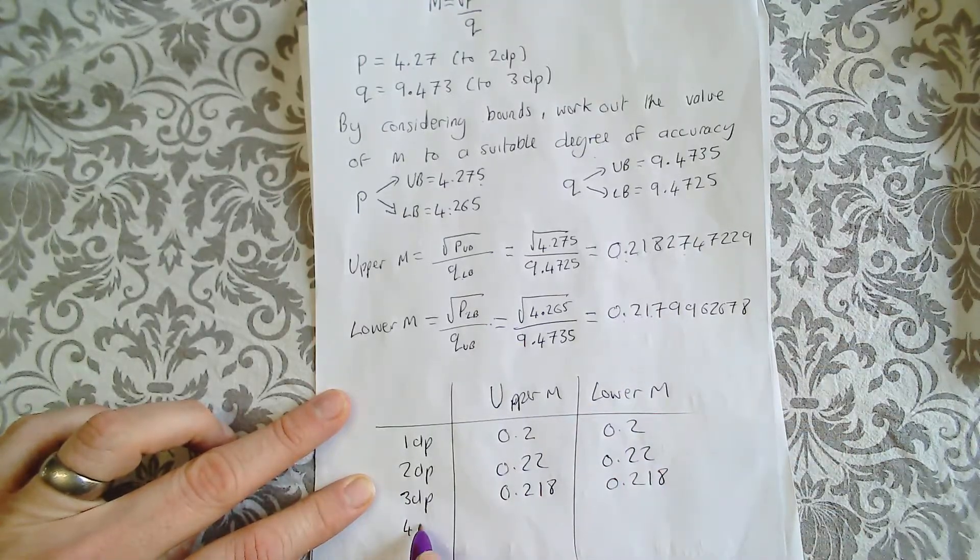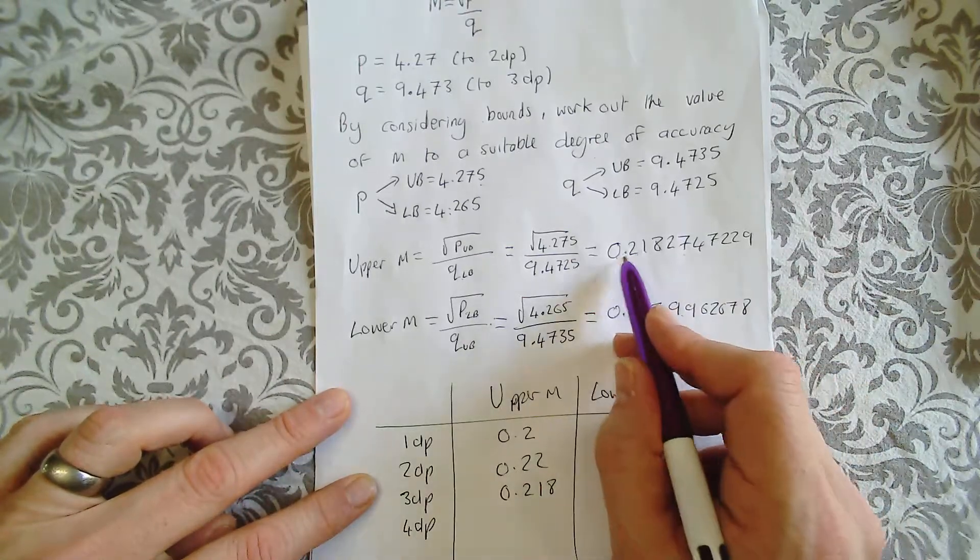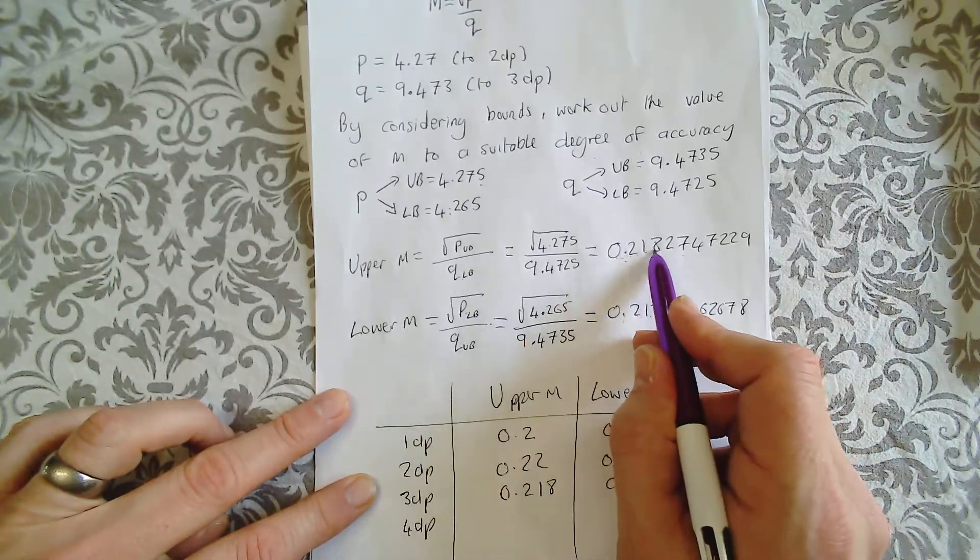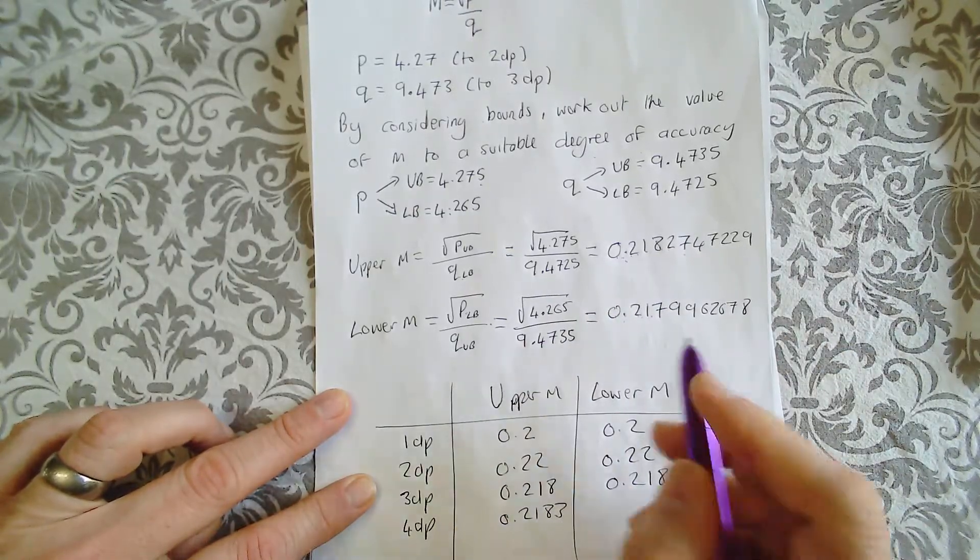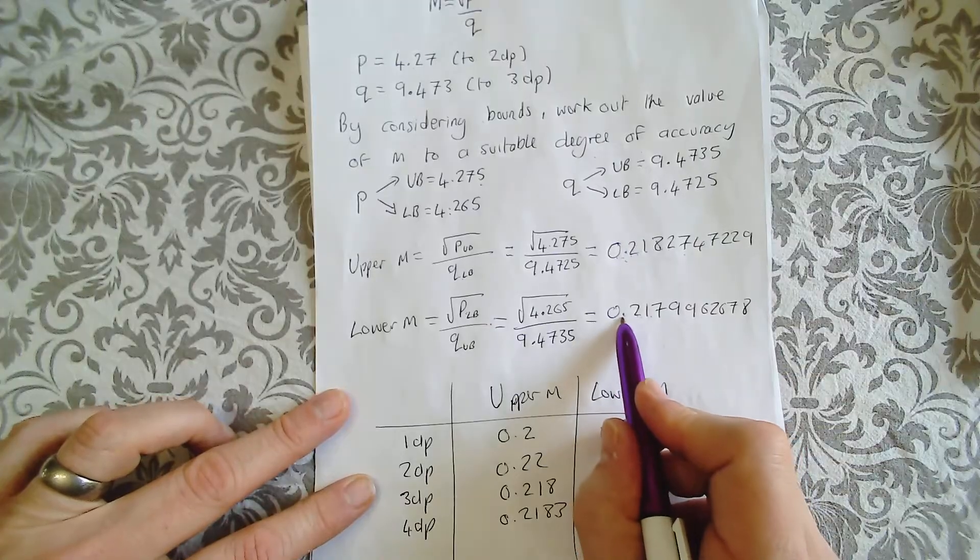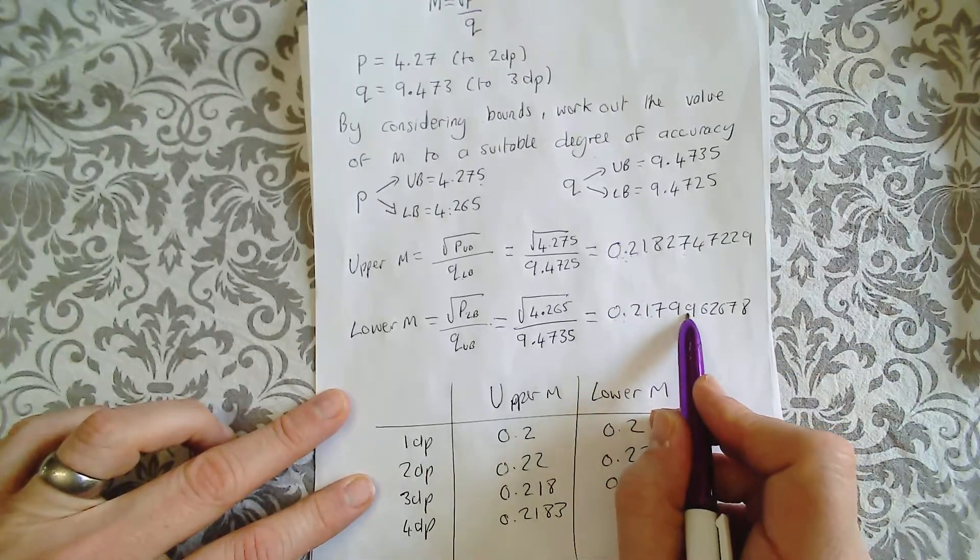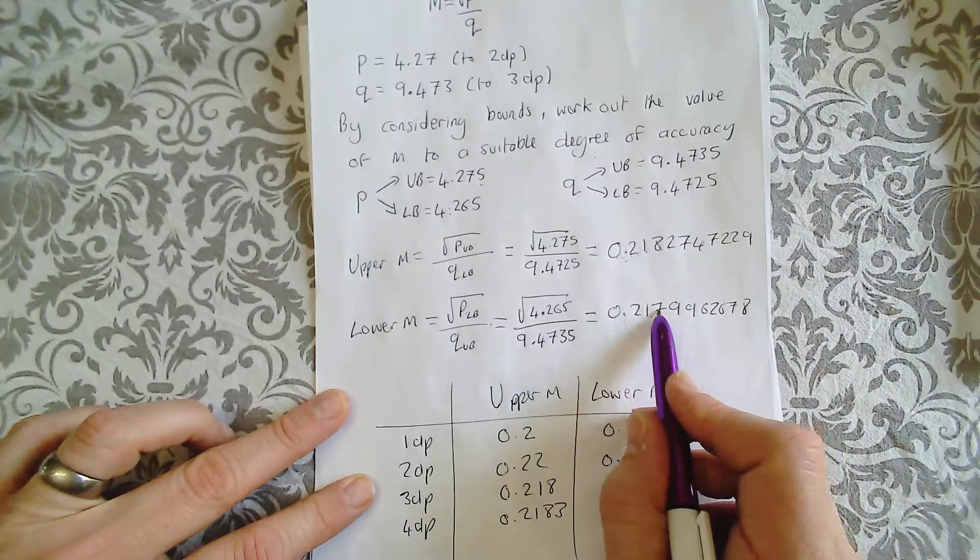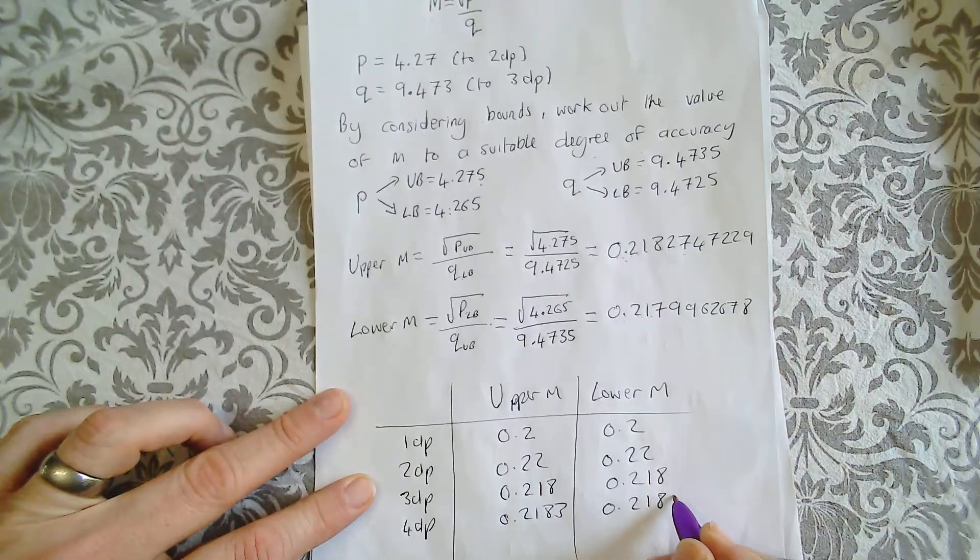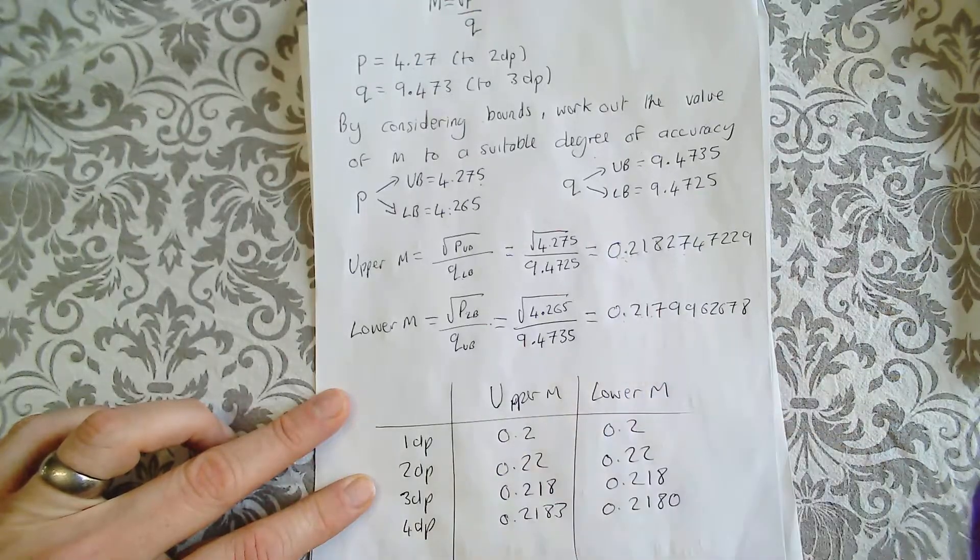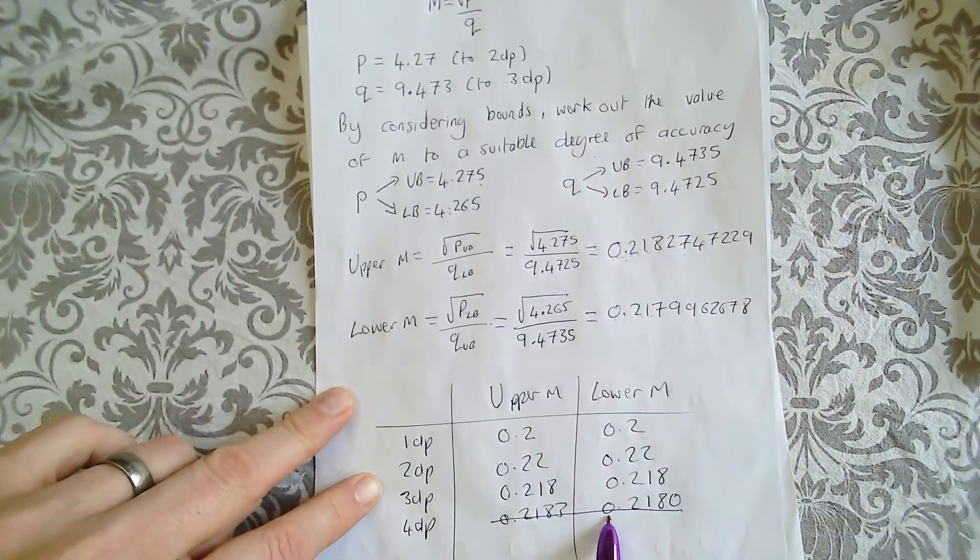Let's try four decimal places. Four decimal places, I'd get 0.2183. Here, I'd get 0.2179. Oh, hang on. There we go. I have to round that up to 80. 0.2180. So this would round up to there. Notice they are different. That's where they change.